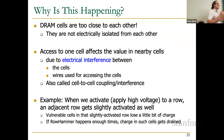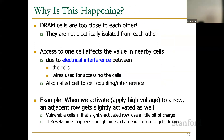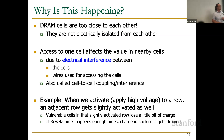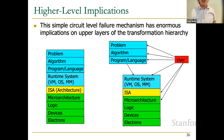Why is this happening? Crosstalk is one reason; electron migration and injection is another. DRAM cells are too close to each other and not electrically isolated — access to one cell affects nearby cells due to electrical interference between cells and the wires used to access them. When you apply high voltage to a row, an adjacent row gets slightly activated as well. Vulnerable cells in that slightly-activated row lose a little bit of charge, and if hammering happens enough times, the charge drains and you get data corruption.